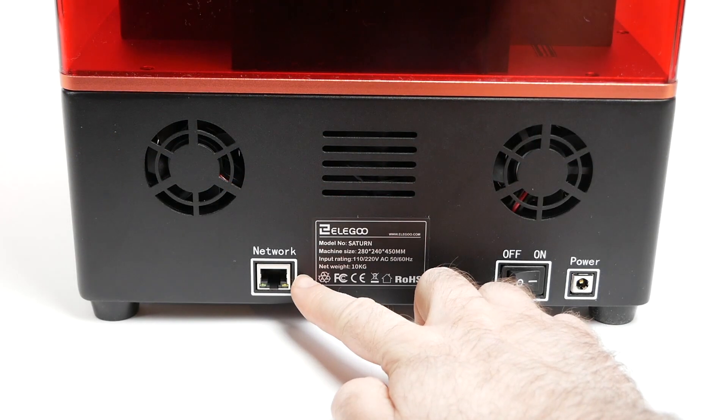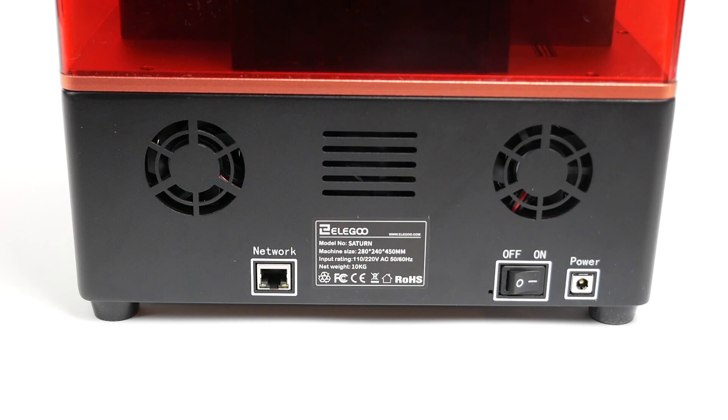If we look on the back, you can see it's got an ethernet jack, which to be honest, I have never used and never planned to use, an off-on switch, and a power connector for the external power brick. You can also see that there are two fans here on the back, which might make you think that it's loud in operation, but it's actually quieter than my other printers.